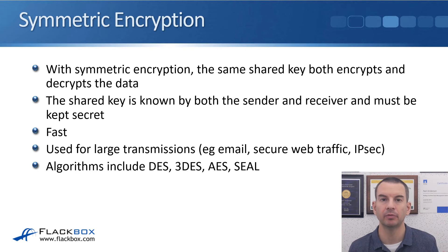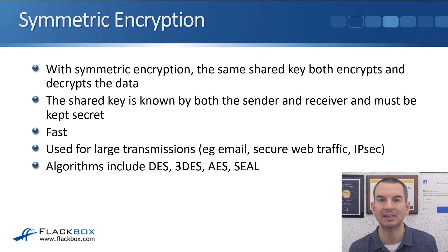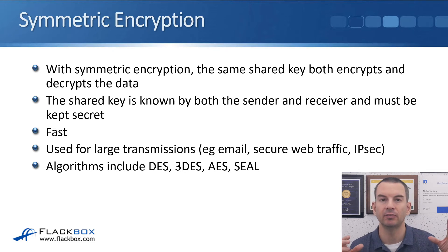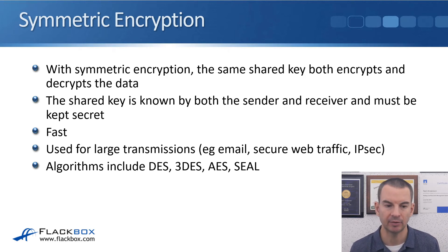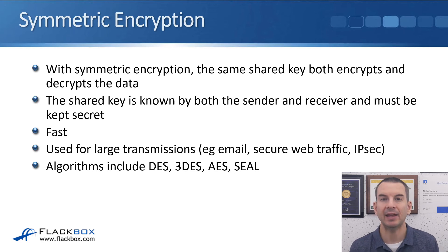With cryptography, we've got both symmetric and asymmetric encryption. With symmetric encryption, the same shared key both encrypts and decrypts the data — you can think of the key as being similar to a password. That shared key is known by both the sender and receiver and must be kept secret. Symmetric encryption is fast, so it's used for large transmissions such as email, secure web traffic, HTTPS, and IPSec for VPN tunnels. Algorithms include DES, triple DES, AES, and SEAL. DES and triple DES are older and considered insecure; AES is more commonly used today.